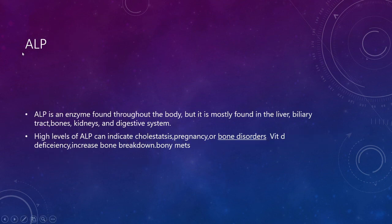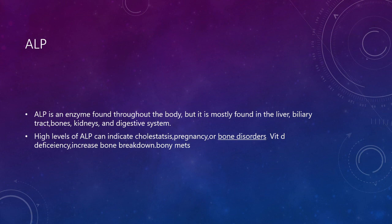Coming to ALP, which means alkaline phosphatase. Alkaline phosphatase is also found in bones, kidneys, and the biliary tract. High levels of alkaline phosphatase can indicate a biliary tract block. It can also increase in pregnancy, as the placenta produces it, and in bone problems like vitamin D deficiency.